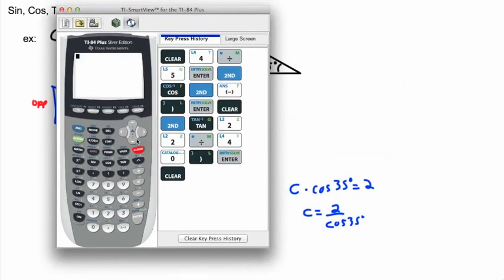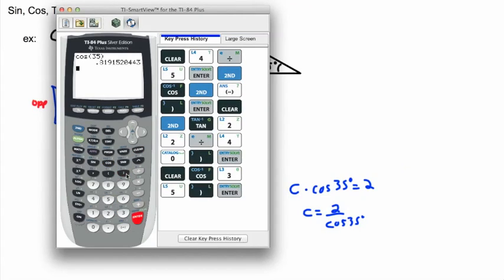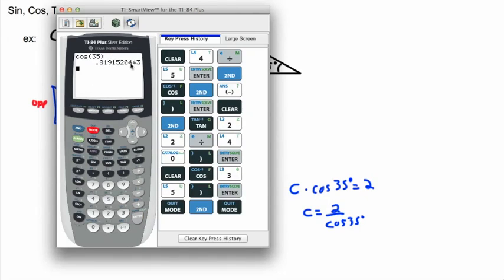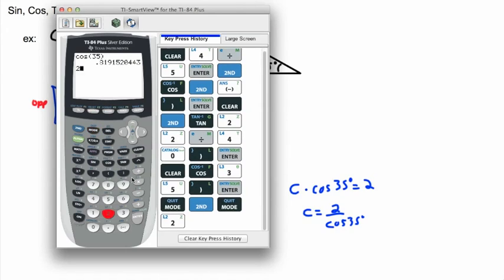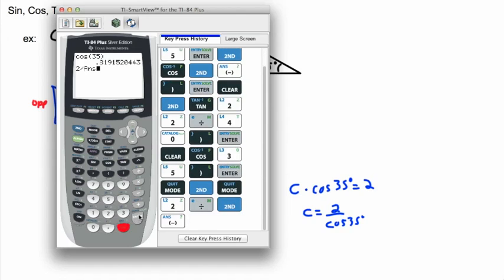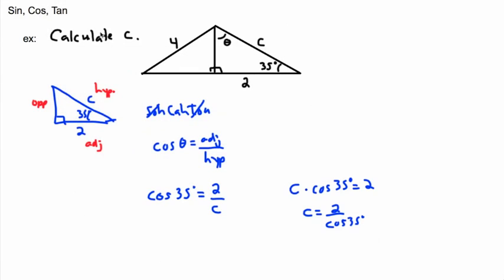I can calculate this on my calculator. Always double-check that you're in degree mode. Compute cos(35°) first, then do 2 divided by that result. You should get an answer of approximately 2.44, so C ≈ 2.4.